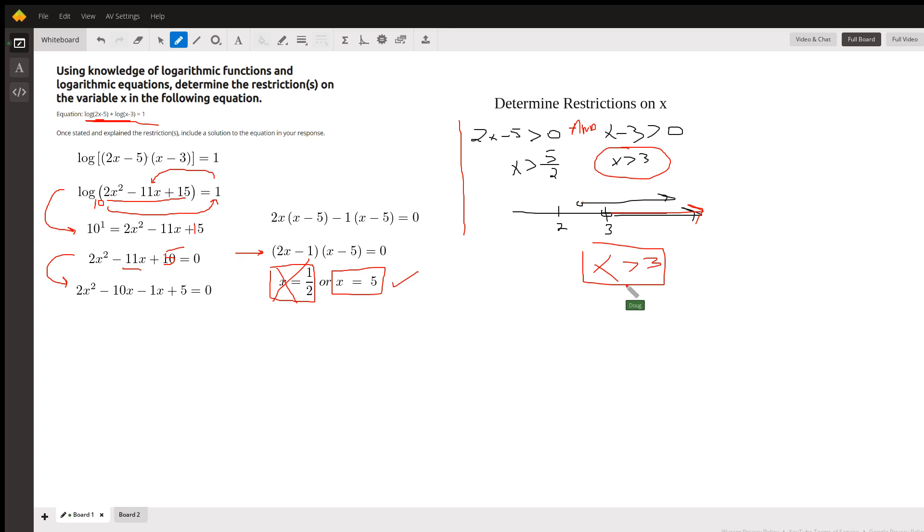But we said already that x has to be greater than 3, so I can reject this answer. You can see if I put 1 half in for x, I will get a negative number. I'll be taking the log of a negative number. That's why that's rejected.